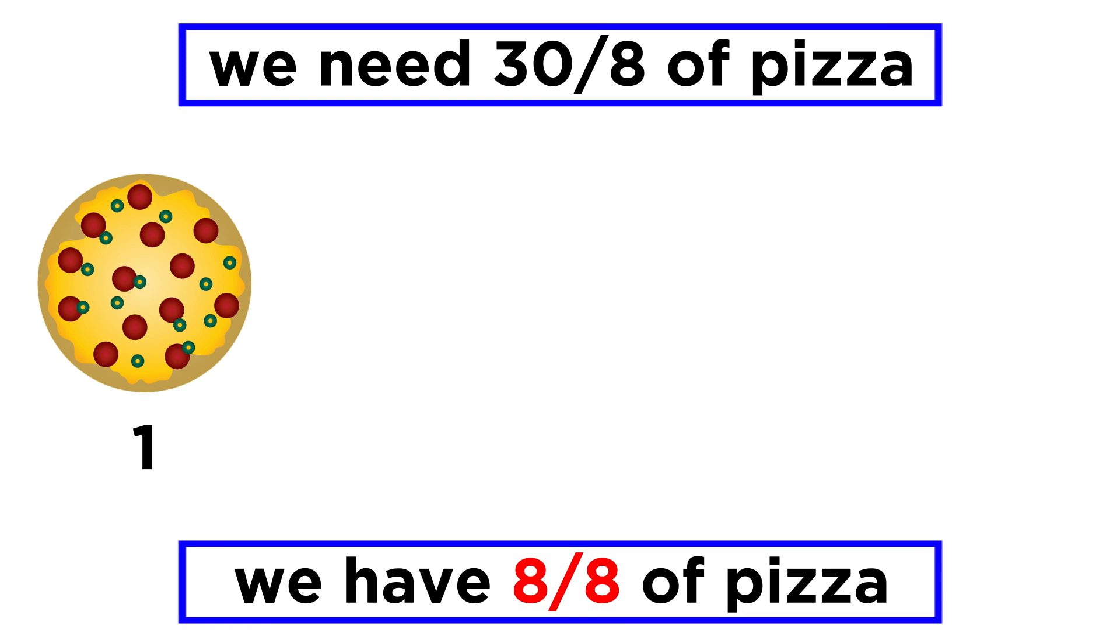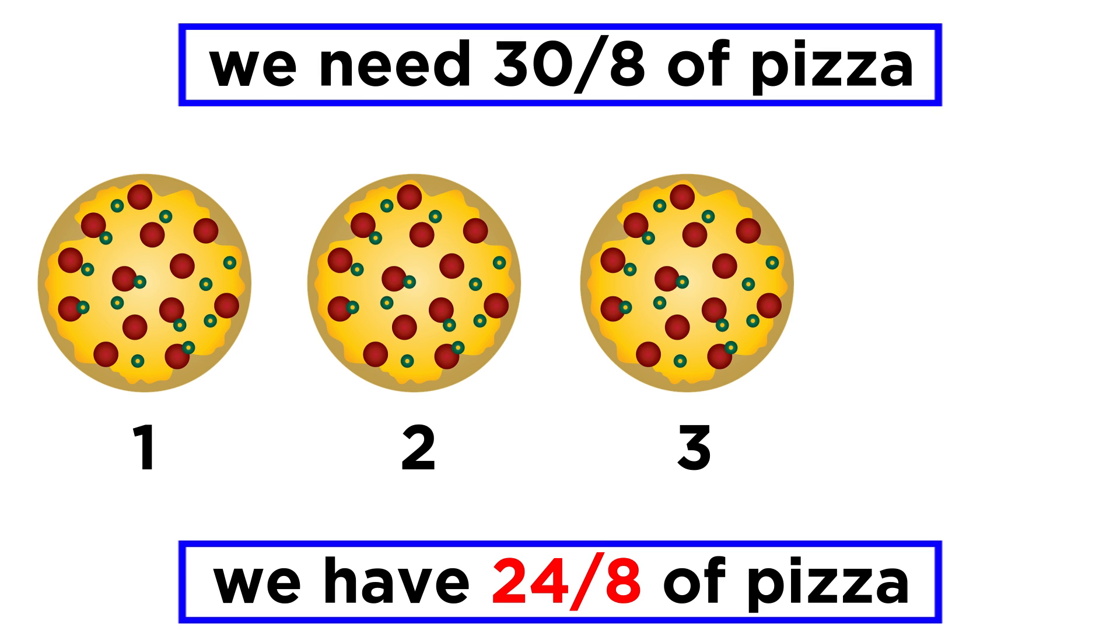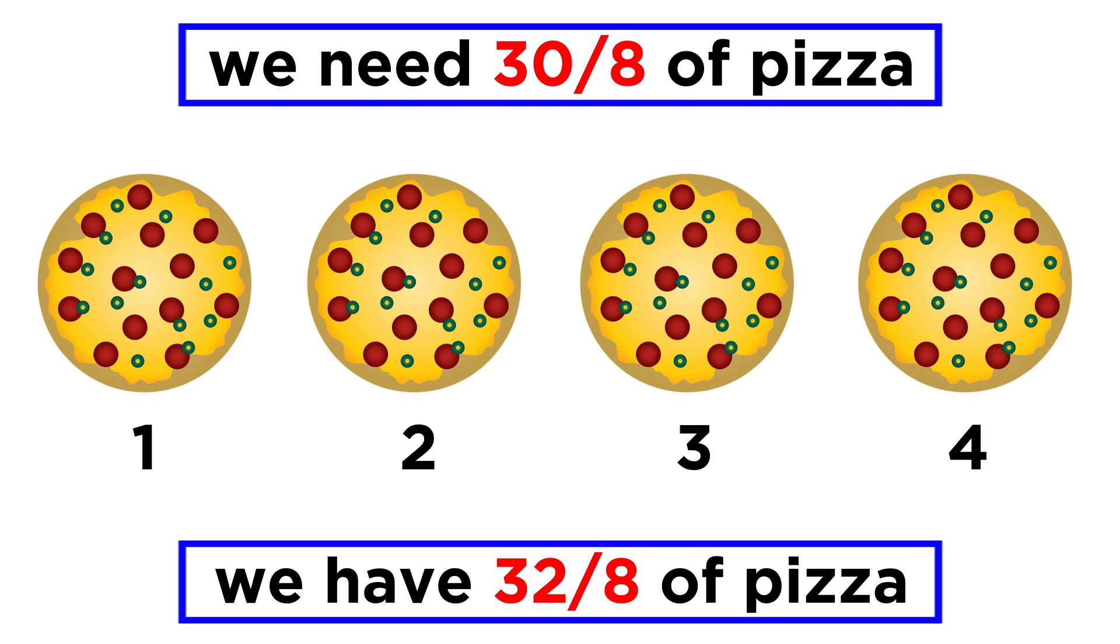Well, eight eighths comprise a whole, so eight eighths is one pizza, sixteen is two pizzas, and twenty-four gives us three whole pizzas. Then we still need six more slices, so instead of thirty eighths, we could say that we need three whole pizzas plus six more slices, or three and six eighths of pizza, which reduces to three and three fourths. That means we need to order four pizzas, and we will have two slices left over.